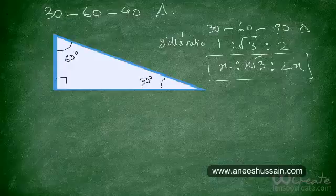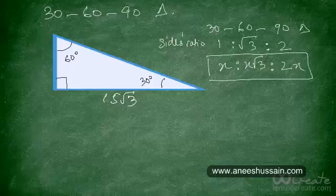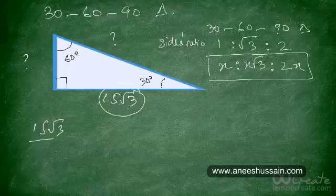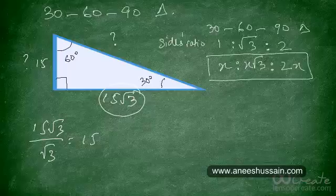Now try the following question. If the side opposite 60° is equal to 15√3, find the lengths of the other two sides. The answer: divide 15√3 by √3 to get 15 — so the side opposite 30° is 15. And the hypotenuse is twice the shortest side, so it's 30.